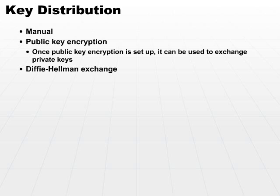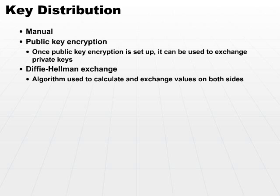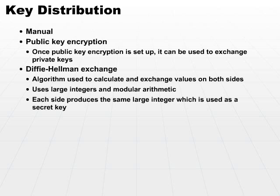If the hybrid approach is not what you're after, you could also use the Diffie-Hellman exchange. The Diffie-Hellman exchange is an algorithm used to calculate and exchange values on both sides. The sender and receiver each run through several steps of the algorithm using very large integers and modular arithmetic. The result is that each side independently arrives at the same large integer value, which is then used as a secret key. You can exchange pieces of the algorithm or result back and forth without compromising intermediate steps, so both parties privately arrive at the same number.